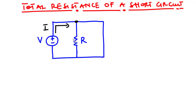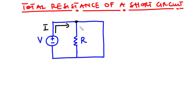At this node, ideally the current is supposed to divide so that part of the current, say I1, flows through the resistor and I2 flows through the wire. However, that is not the case for this circuit. Because the thin wire connected across the resistor has very low or no electrical resistance, almost all the current will flow through the wire, with little or no current flowing through the resistor R. When this happens, we say that R has been short-circuited.